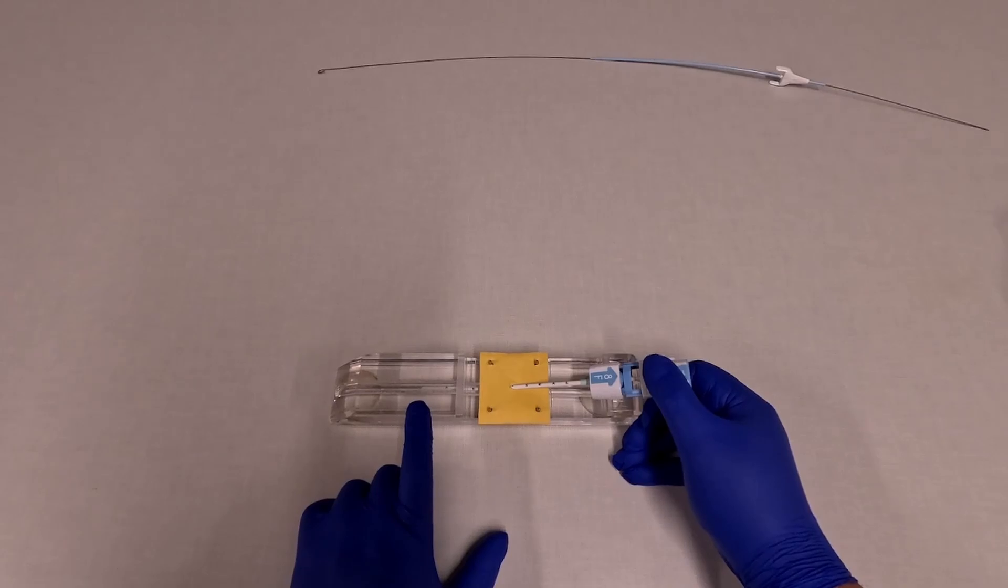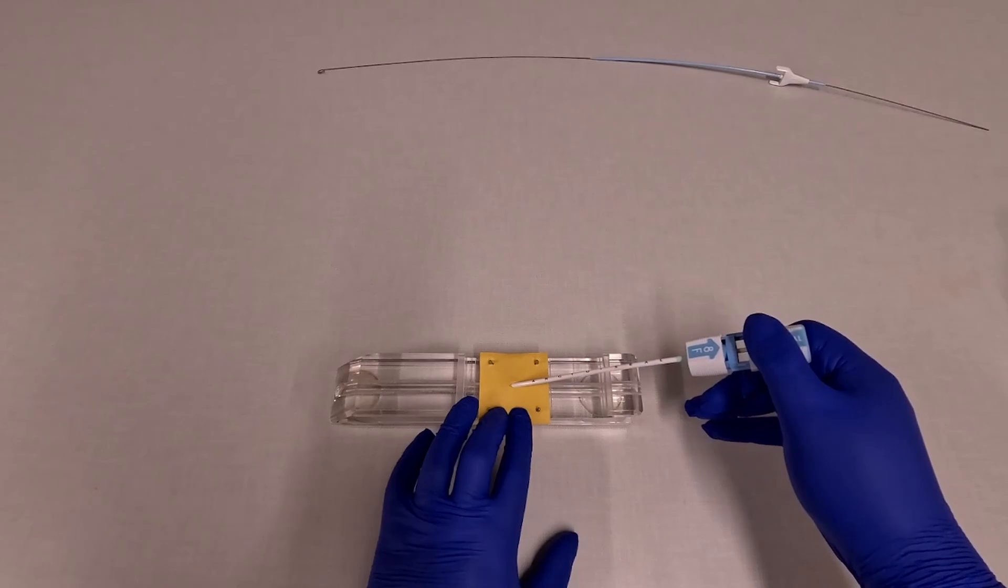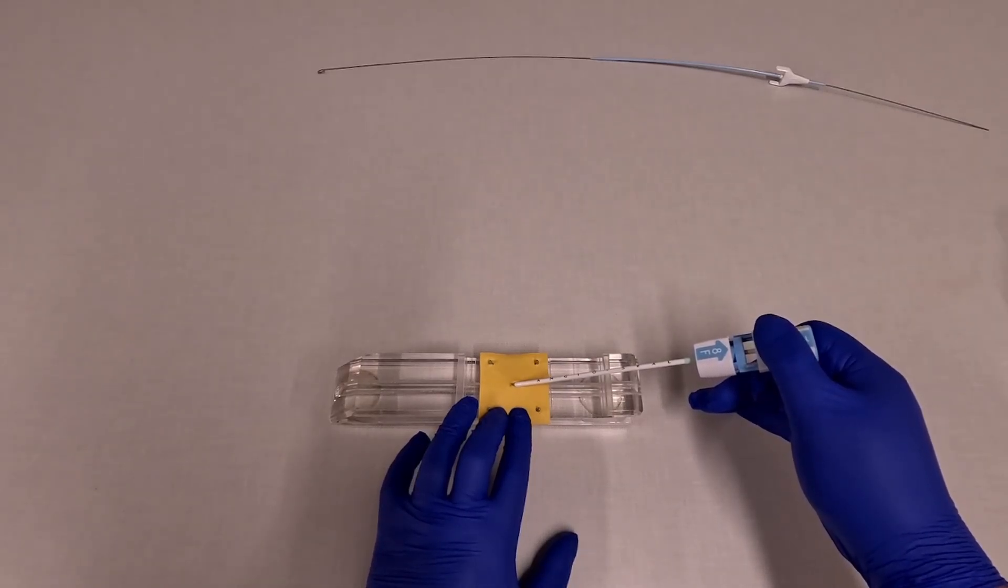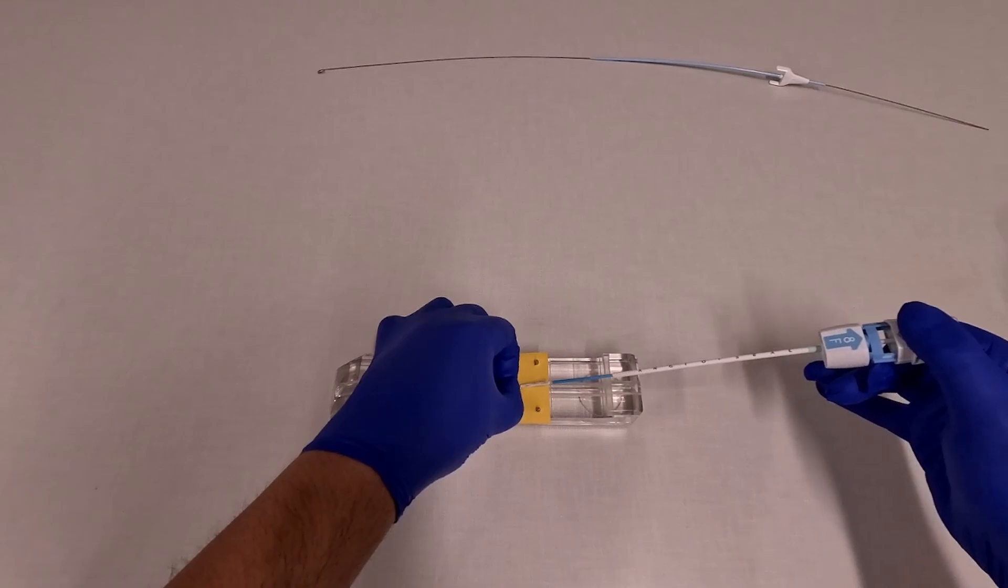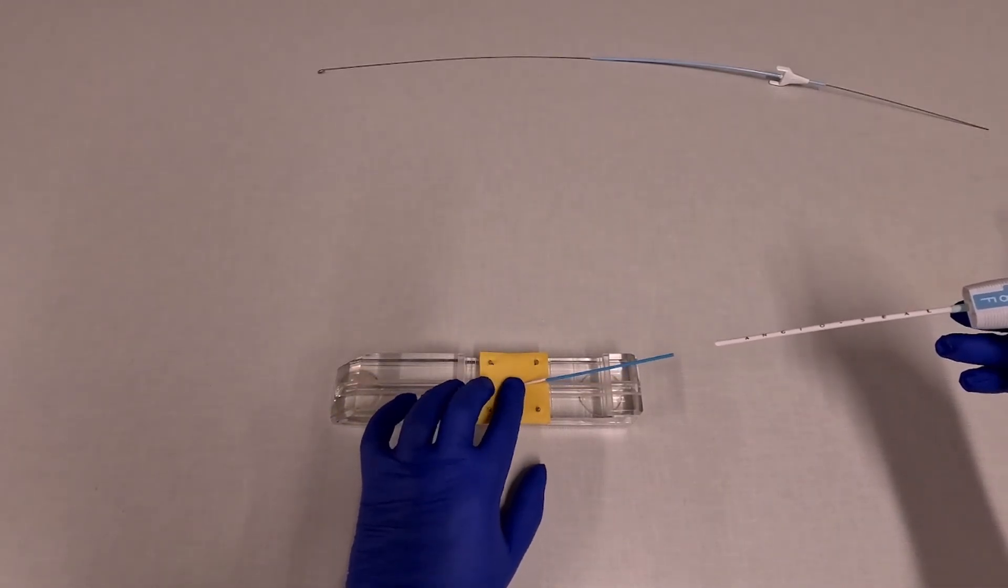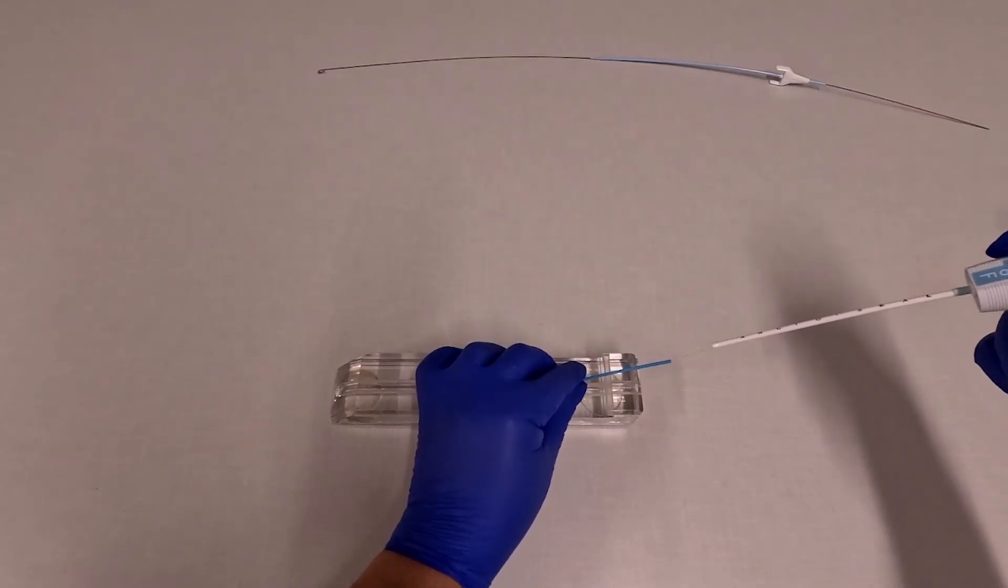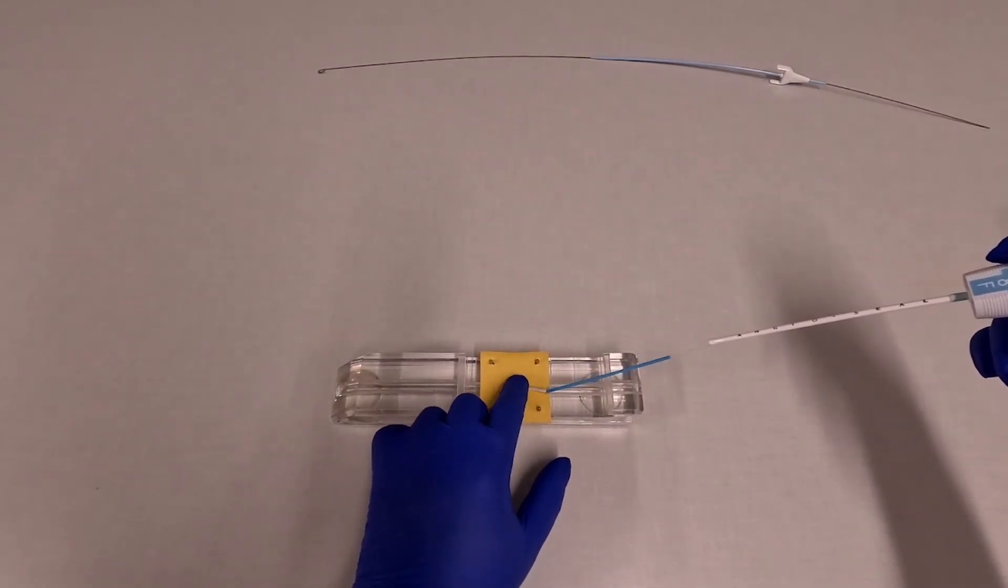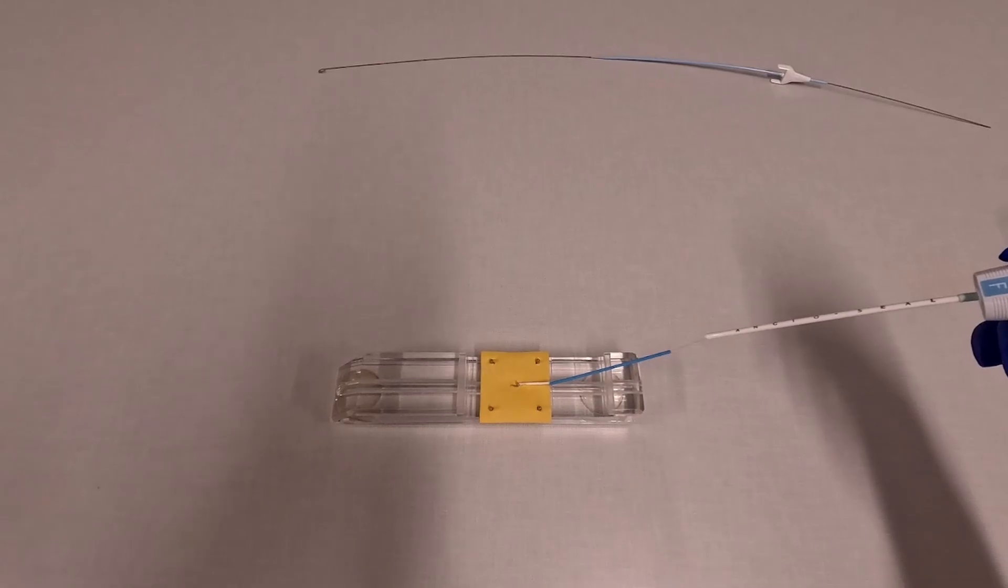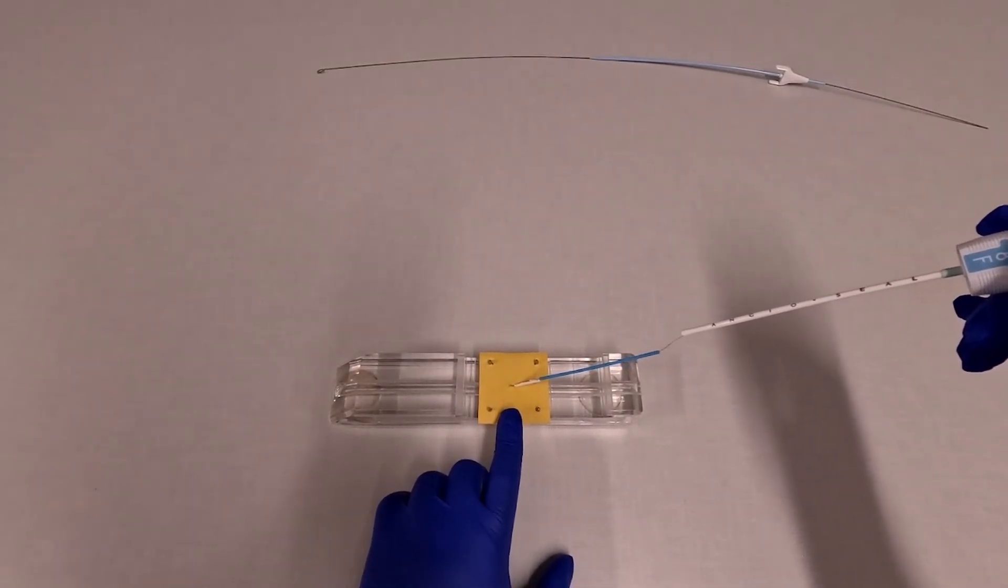Now you're ready to deploy the AngioSeal. So you're going to pull back and this brings the anchor up against the arteriotomy. Now on this model I have to hold manual pressure. In reality you can just pull. And you're going to pull with basically guitar string tension with your right hand. This brings the anchor up against the arteriotomy. And now the device is all on the suture.